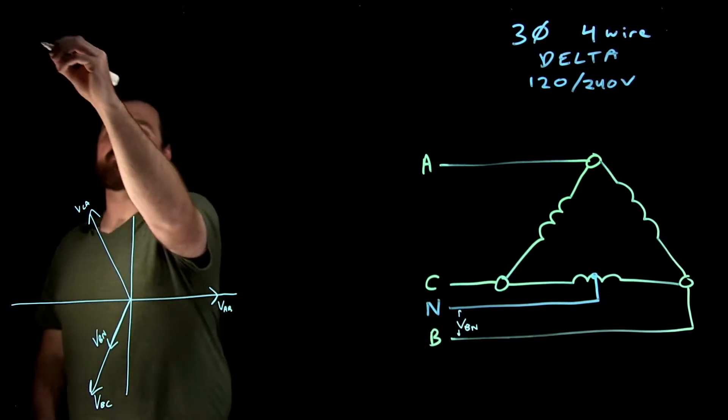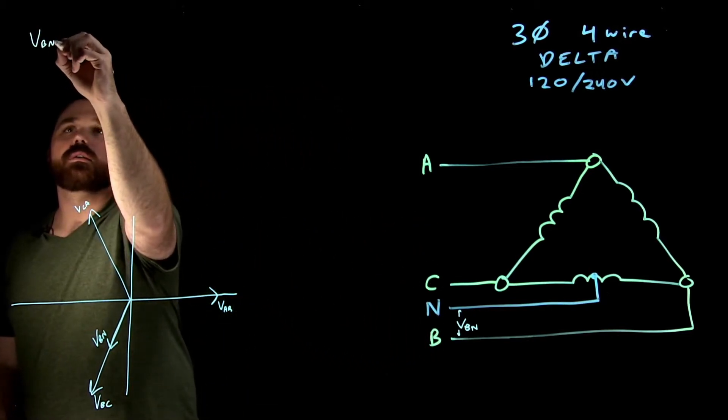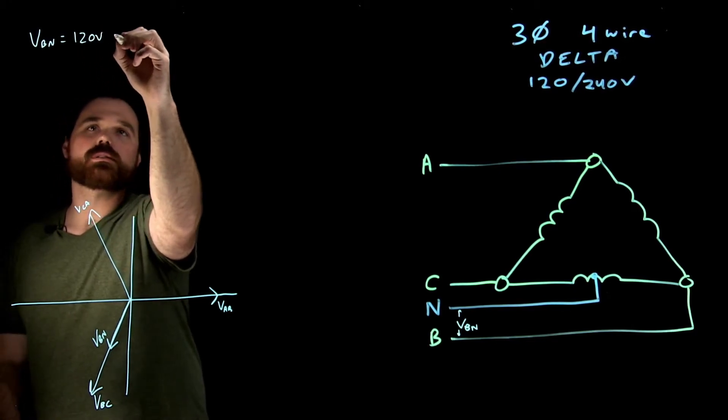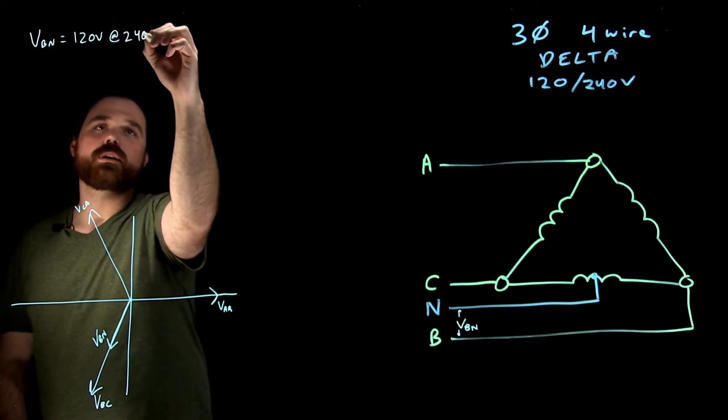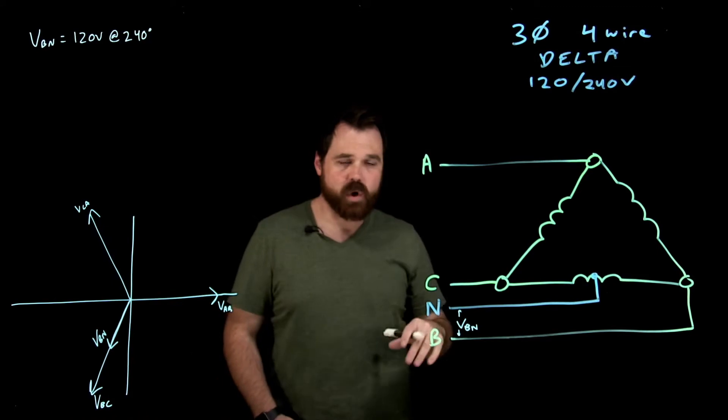So in this case, VBN would equal 120 volts at 240 degrees.